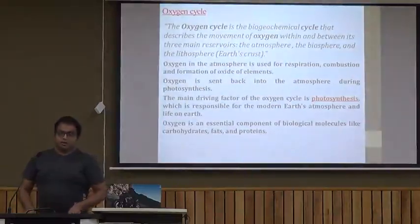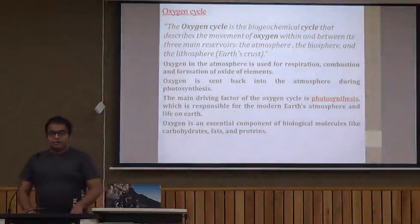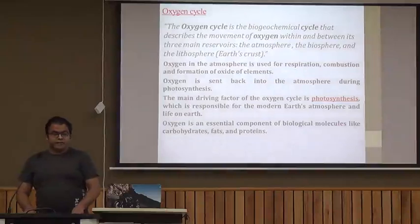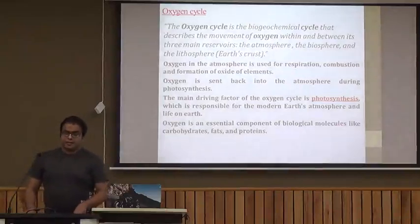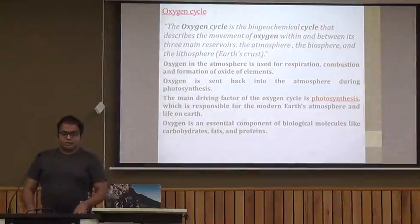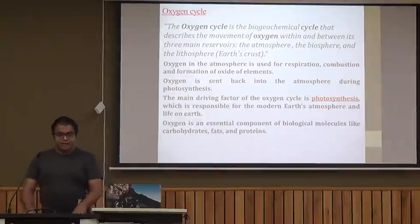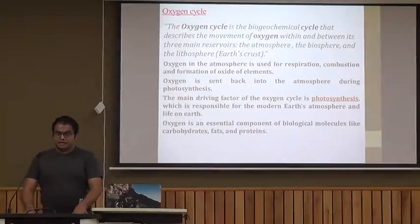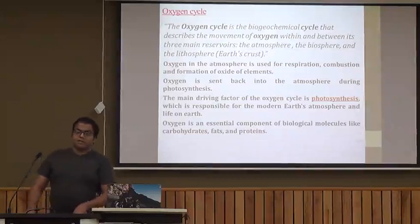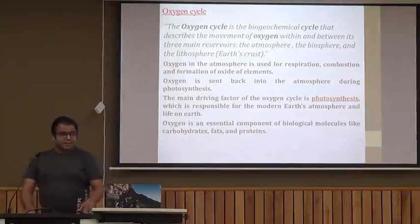Now, the oxygen cycle. In this cycle, oxygen is moved within three main reservoirs: atmosphere, biosphere, and lithosphere. Oxygen in the atmosphere is used for respiration, combustion, and formation of oxides of elements. Oxygen is sent back into the atmosphere by photosynthesis from plants. The main driving factor for this cycle is photosynthesis, which is responsible for the modern Earth's atmosphere in which we all live.